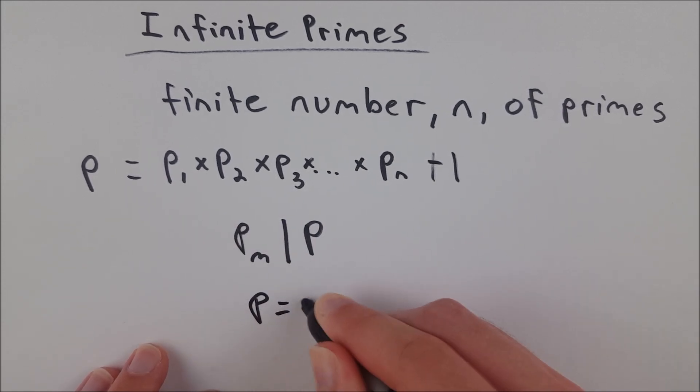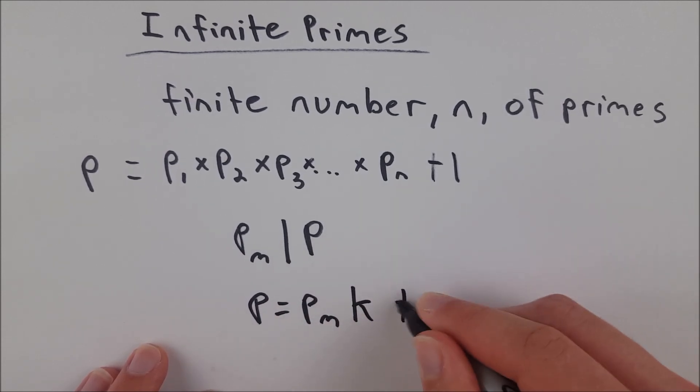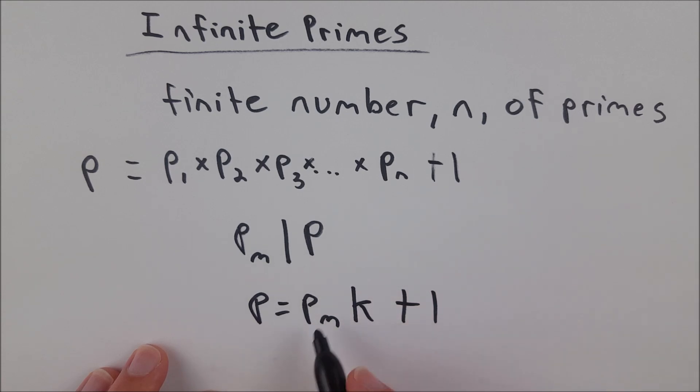So P is equal to p sub m times some integer k plus 1. Therefore, this prime number p sub m doesn't divide P, which is a contradiction.